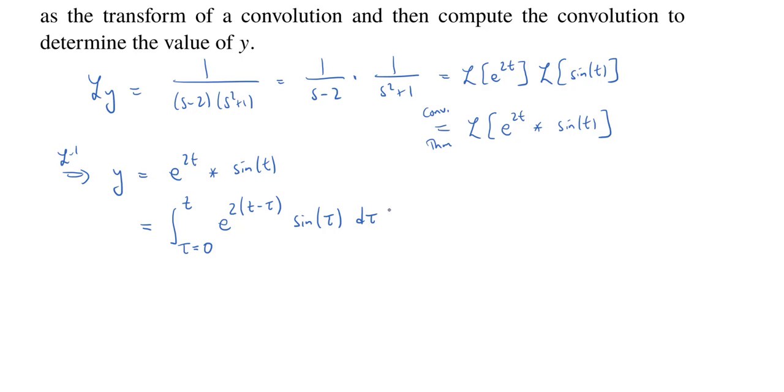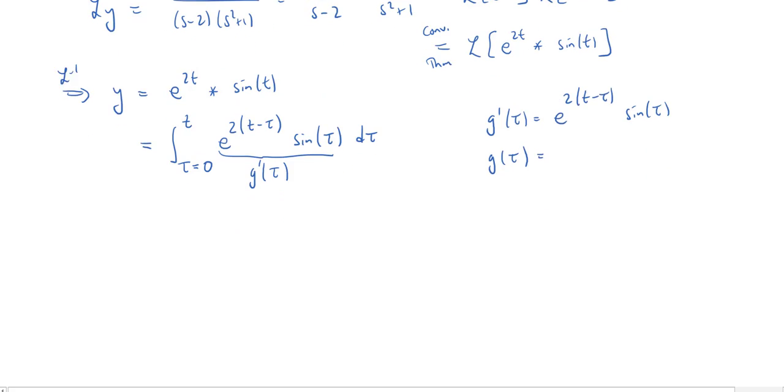Now it's an exponential times a sine. This is classic, play it straight, use integration by parts. So let's give a name to this. Call this g'(tau). Remember this is a function of tau we're dealing with. So g'(tau) is equal to e^(2(t - tau)) times sin(tau). And we want to find an antiderivative g(tau). So we're going to use integration by parts.